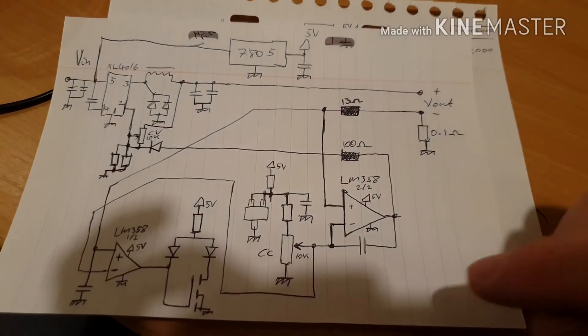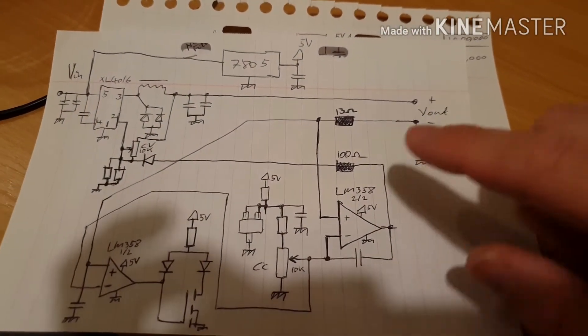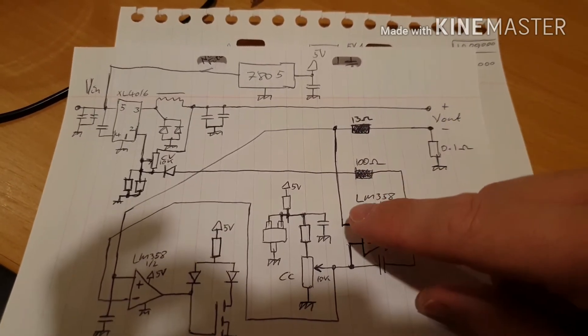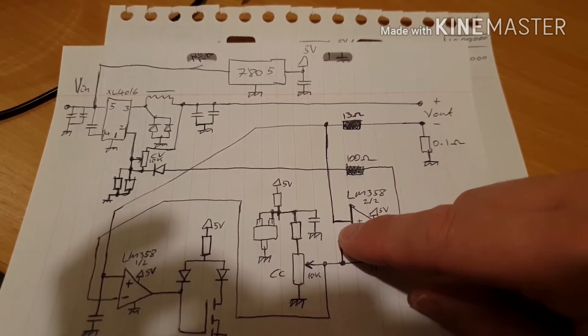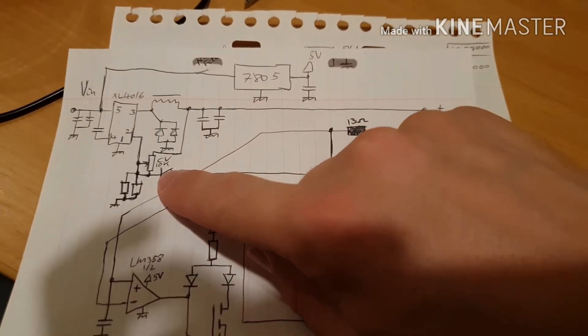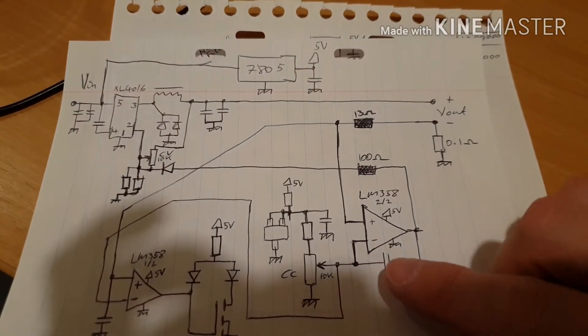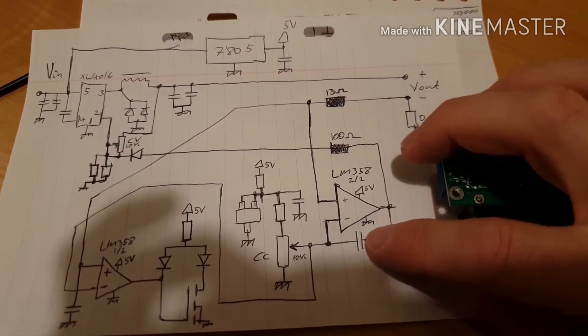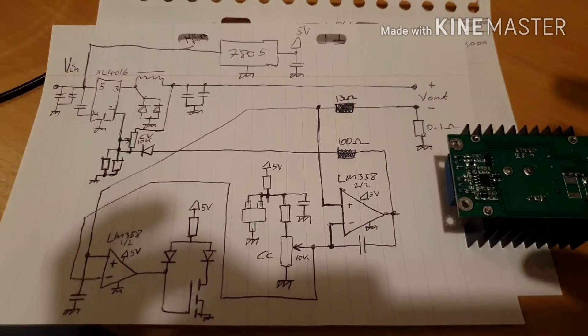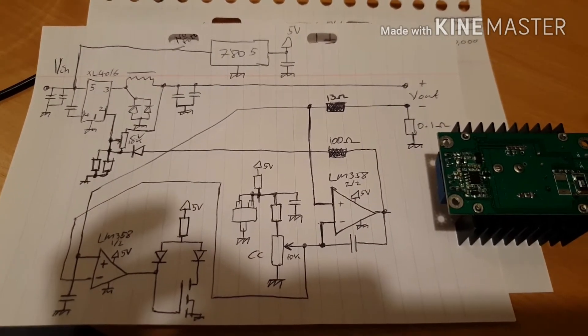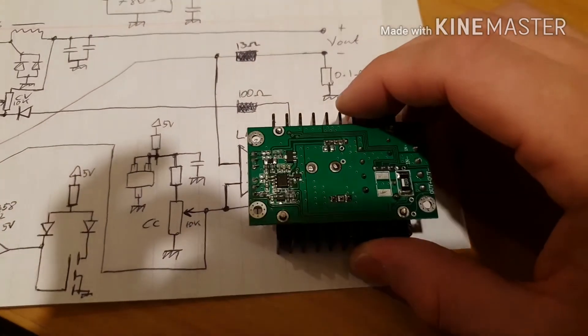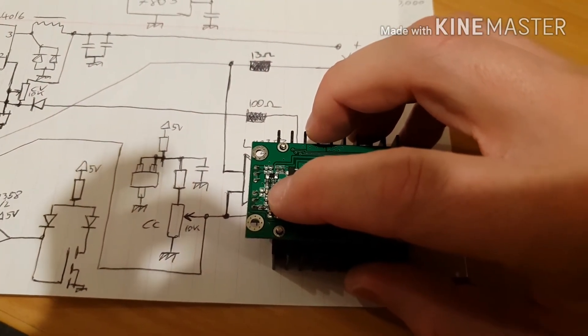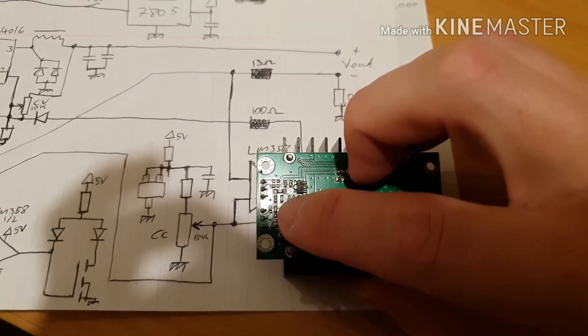Now what should happen, in theory, is we should reach an equilibrium point where the current through here is the right amount to mean that these two voltages are the same, and that this stays as it should be. Now I think they've misfitted this capacitor, because that capacitor slows down the response of that op amp, and I think that's why we're seeing extremes of fully off and fully on, rather than finding a stable equilibrium. That capacitor is right there, it's that little ceramic capacitor.